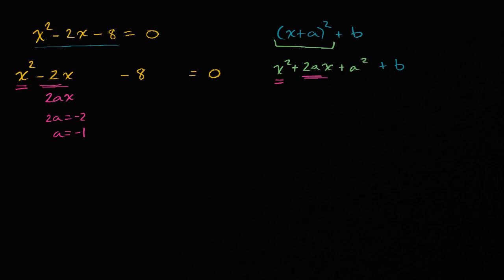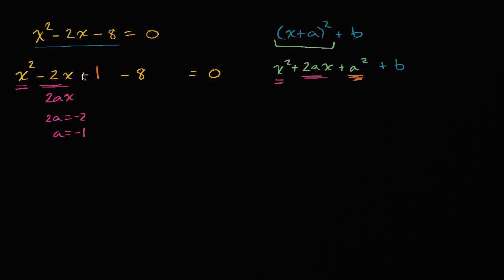We want to have an A squared term. If A is negative 1, then A squared is positive 1, so let's add a plus 1 there. But we can't just willy-nilly add something to one side without adding it to the other, or without subtracting it again on the same side — otherwise we're fundamentally changing the truth of the equation. So I add one and subtract one from the left-hand side, not really changing its value.